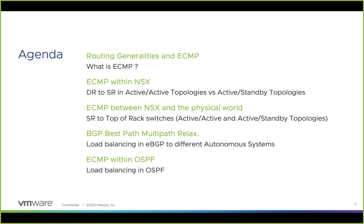A quick look at the agenda: we are going to start with a quick reminder on routing and what is ECMP. Then we are going to dig deeper into how we implement ECMP within NSX. We have multiple layers — between the DR and the SRs, and between the SRs and the top-of-rack switches. Then we'll talk about ECMP within a BGP architecture with BGP Best Path Multipath Relax, and finally ECMP for an OSPF architecture.